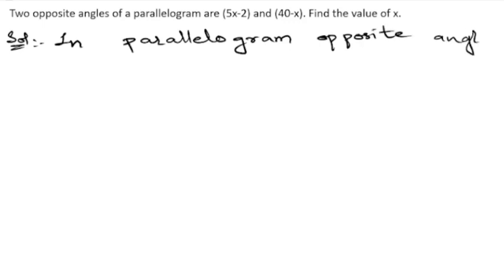So here we can write in parallelogram, opposite angles are equal, so we get 5x minus 2 is equal to 40 minus x.